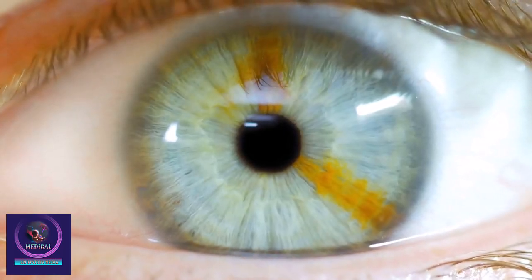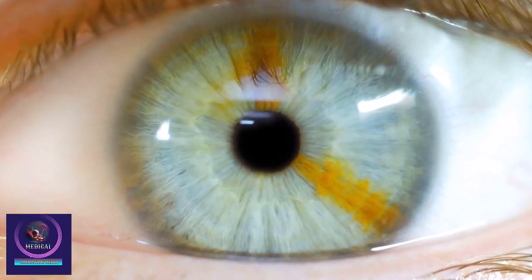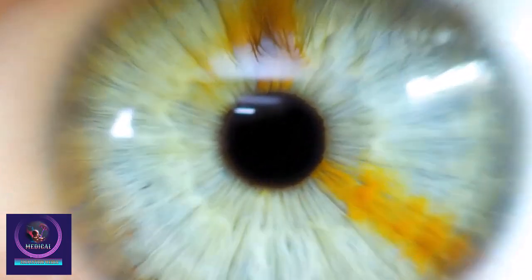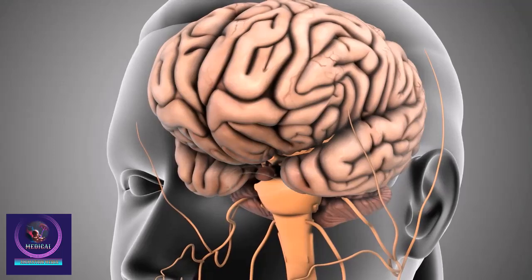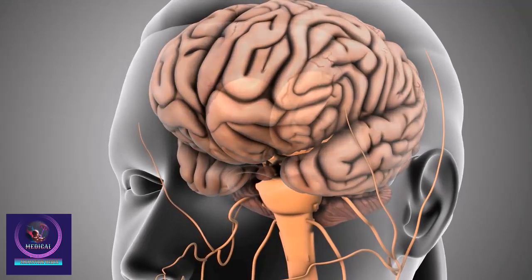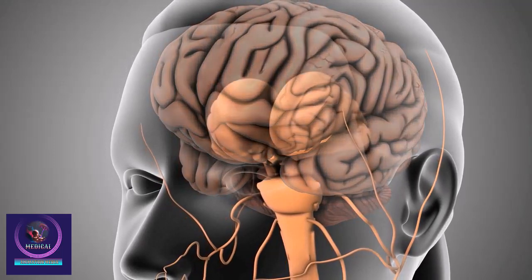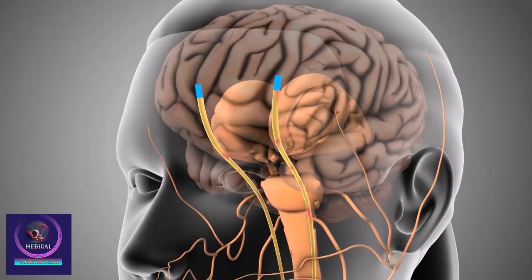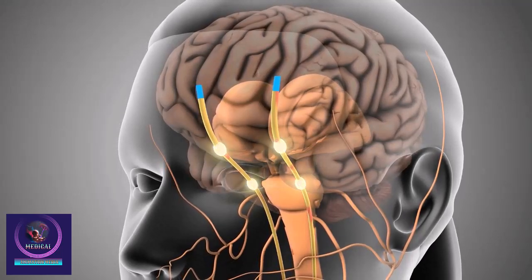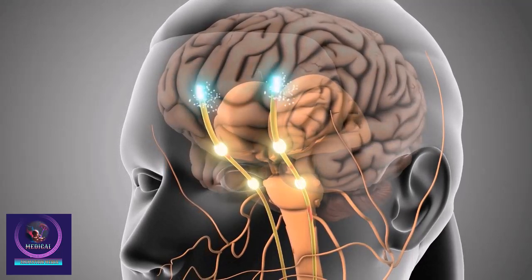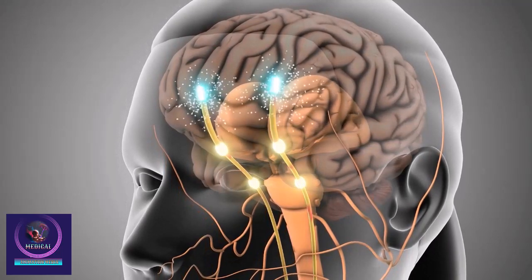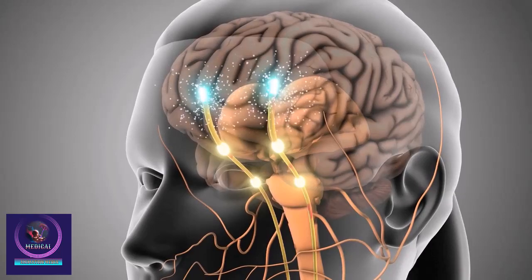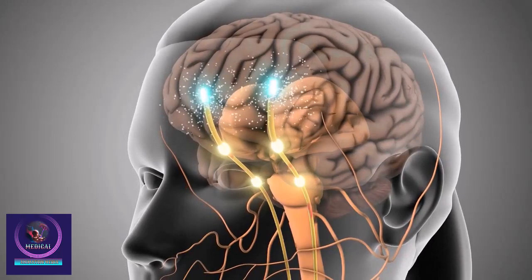The brain stem is found in the middle of the brain and is responsible for movement of the eyes and mouth, hunger, heart function, breathing, blood pressure, and other things like sneezing, coughing, and swallowing.